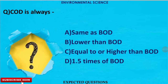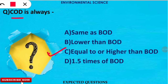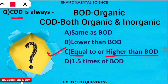The next question is: COD, which is chemical oxygen demand, is always compared to BOD, that is biochemical oxygen demand. The correct option is option C. COD is equal to or higher than BOD because BOD measures the amount of oxygen required to break down organic material in water, but COD considers both organic and inorganic components, so it is always higher than or equal to BOD.